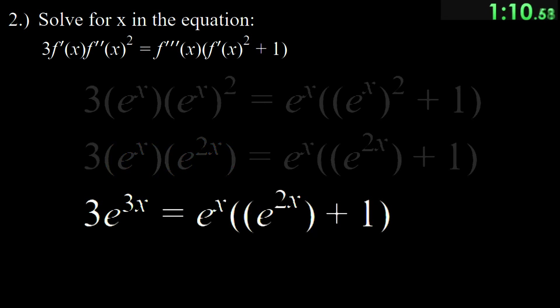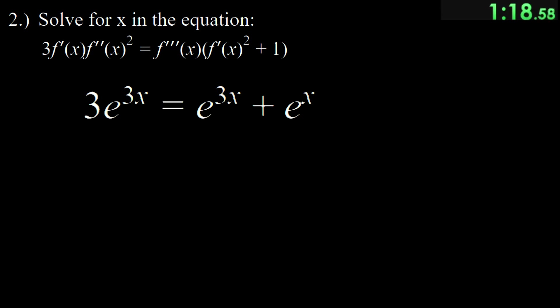After that, we multiply the right hand side factors where these become e to the 3x plus e to the x. Following that, we transpose the right e to the 3x to the left where they subtract to 2 e to the 3x. Next, we divide both sides by e to the x where the equation becomes 2 e to the 2x equals 1.